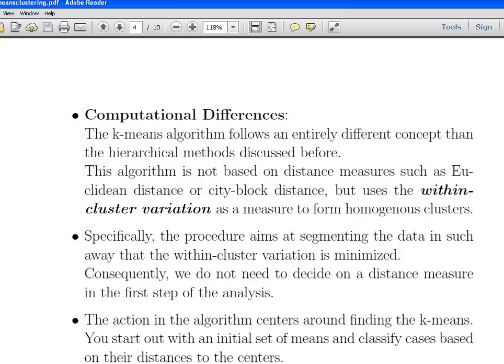By the way, I've done hierarchical clustering before this, so it precedes this in my sequence, but if you haven't seen hierarchical clustering, it doesn't really matter, you can go back. It's not based on distance measures such as Euclidean distance or city block distance, but it uses a thing called within cluster variation to perform, to form homogenous clusters. Specifically, the procedure aims at segmenting the data in such a way that the within cluster variation is minimized. Consequently, we do not need to decide on a distance measure in the first step of the analysis.